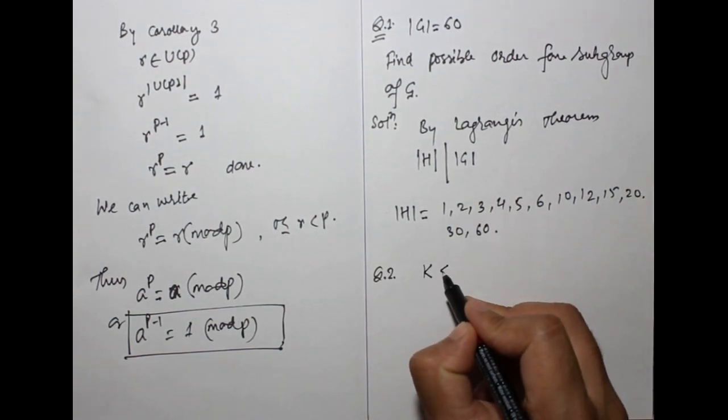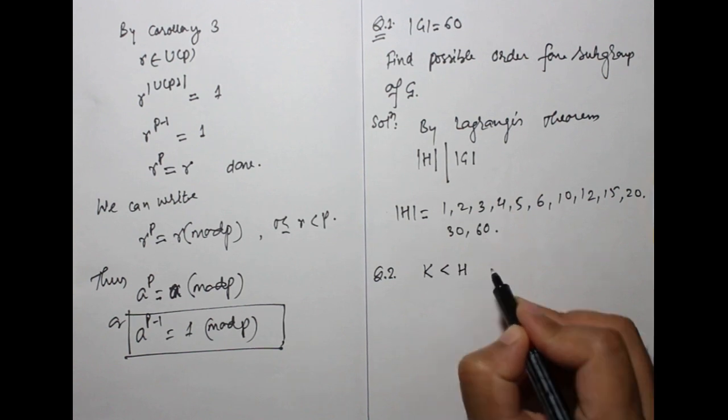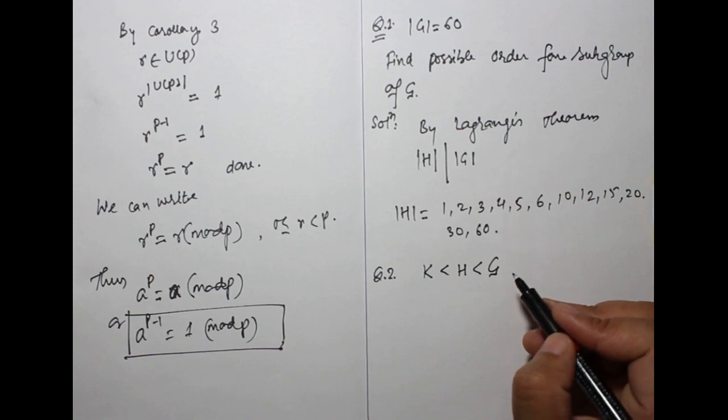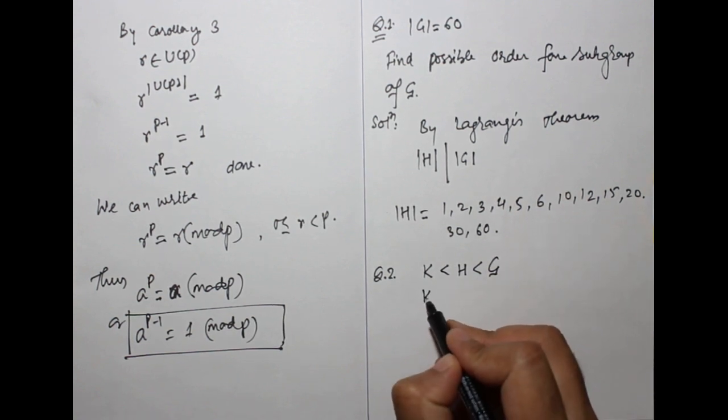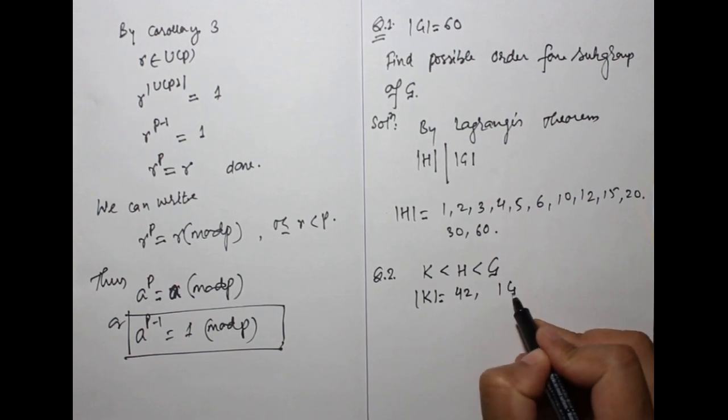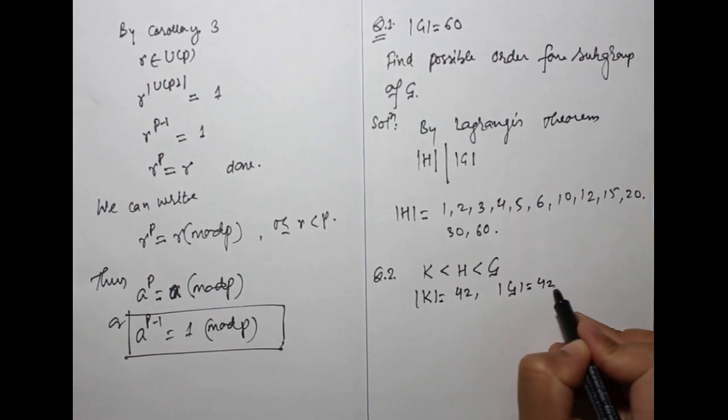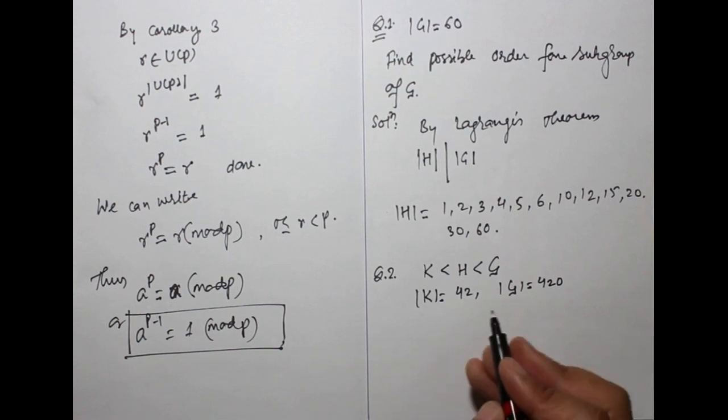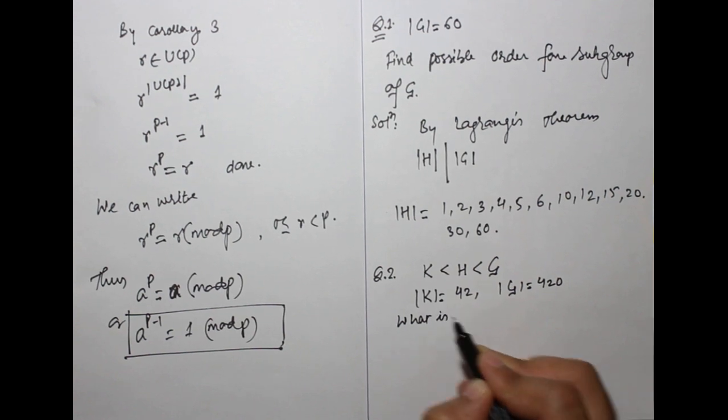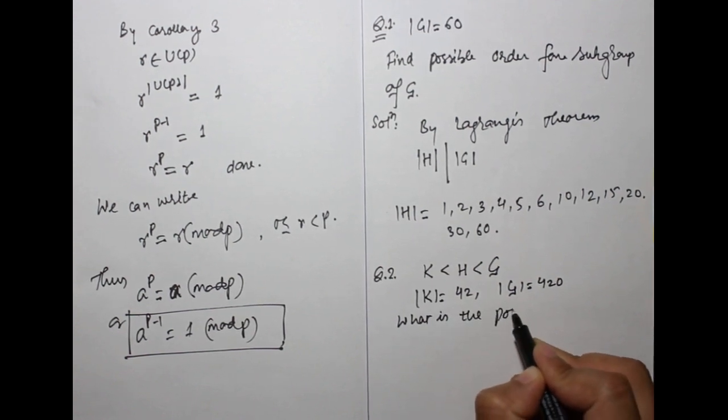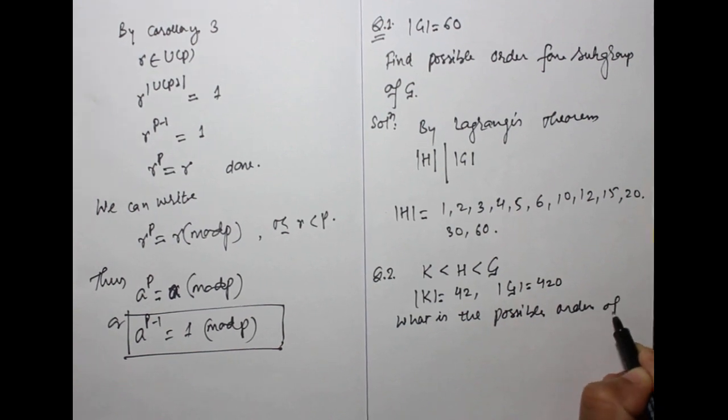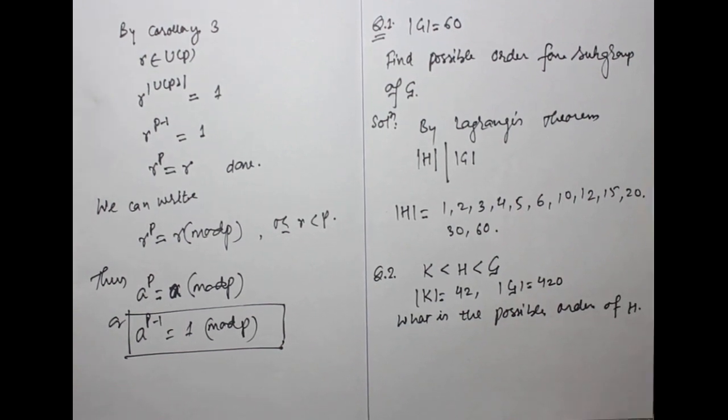Next problem: K be a subgroup, a proper subgroup of H, and H be the proper subgroup of G, where G is finite, and given that order of K equals to suppose 2, and order of G equals to 420. Then what is the possible order of H?